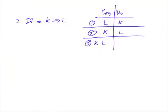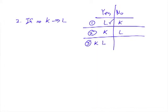Put yet another way. Notice our options. In our option one, we have L in the yes. In option two, we have K in the yes. In option three, we have K and L into the yes.